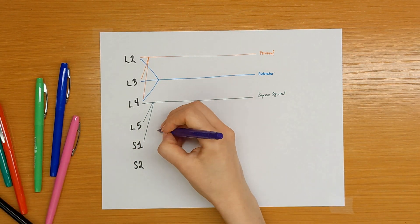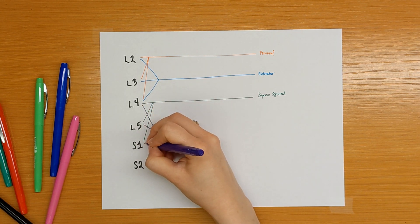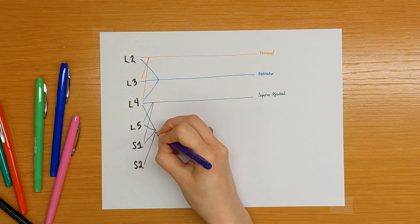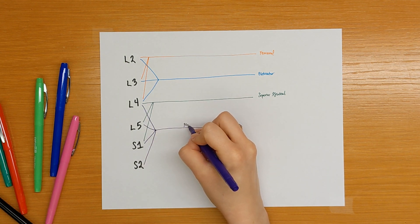Then our sciatic nerve, L4, L5, and S2 combine to form the sciatic.